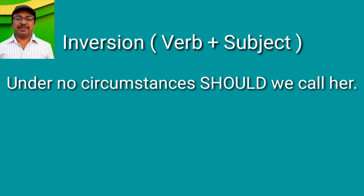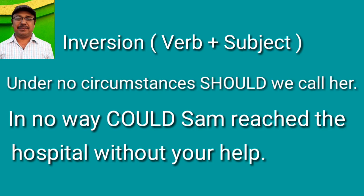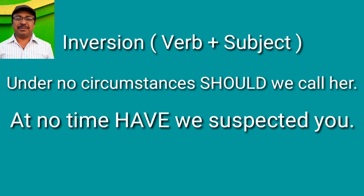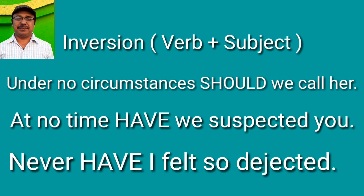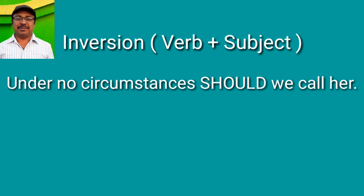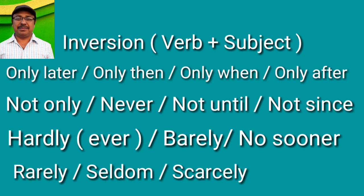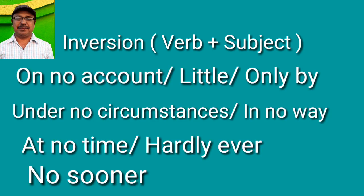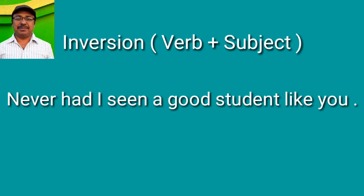'Under no circumstances should we call her.' 'In no way could Sam reach the hospital without your help.' 'At no time have we suspected you.' 'Never have I felt so dejected.' I can simply say 'We shouldn't call her under any circumstances,' but to emphasize or show determination, I say it differently: 'Under no circumstances should we call her.' That means commitment. These are common examples of inversions where we put the verb before the subject to emphasize a sentence, bring variety in speech, or add a dramatic effect.